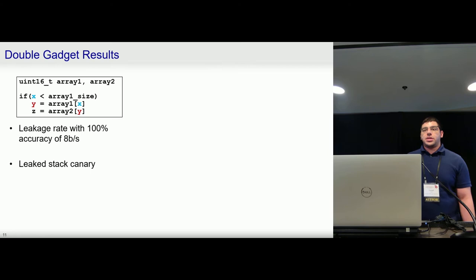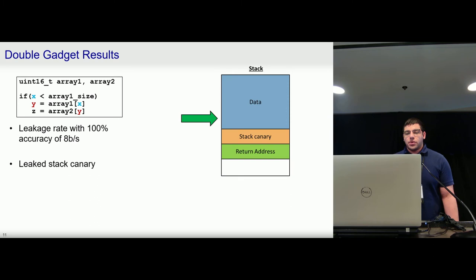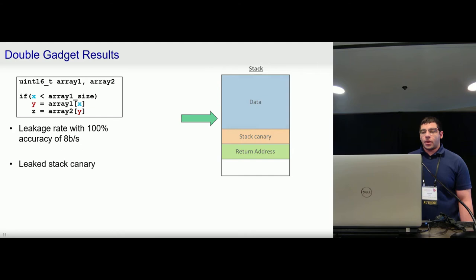So, we ran a proof-of-concept attack where we controlled a thread that spawned a victim thread that contained this code of the nested array access within the conditional statement. And the attacker thread had no way of directly modifying the value of X. So we used this to leak a stack canary since we just needed to flip a bit that pointed us just past the bounds of the stack that these arrays resided on, leading us to point to the canary. And we showed how we could leak this canary with 100% accurate leakage at a rate of 8 bits per second.